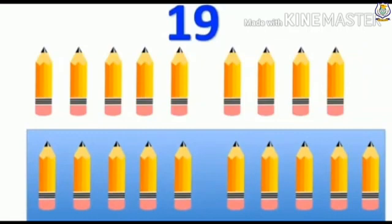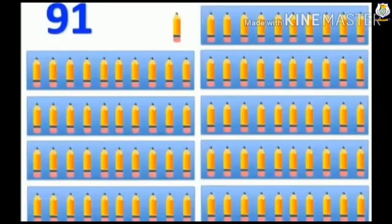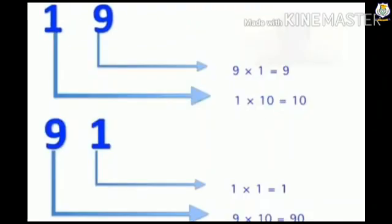Now 1 and 9, it becomes 19, means one group of 10 and 9 other pencils. Now what if we change the places of 1 and 9? That means it will become 91. That means here we are having 9 groups of 10s and one other pencil.